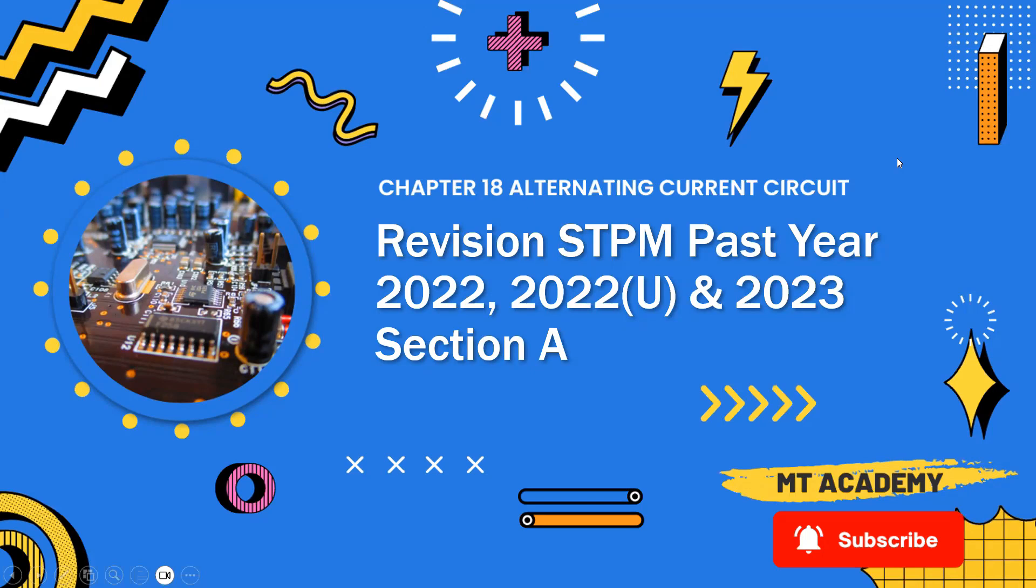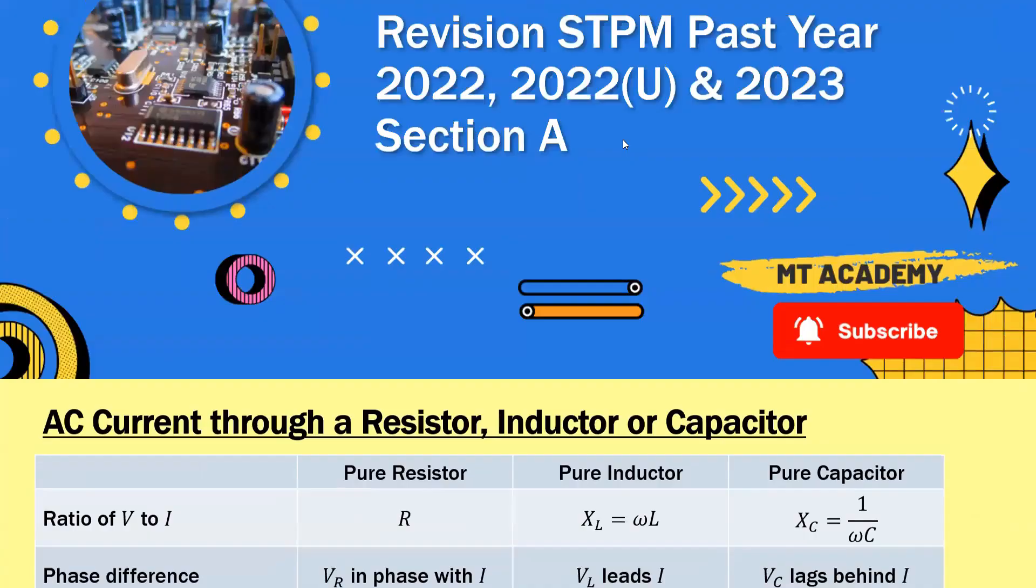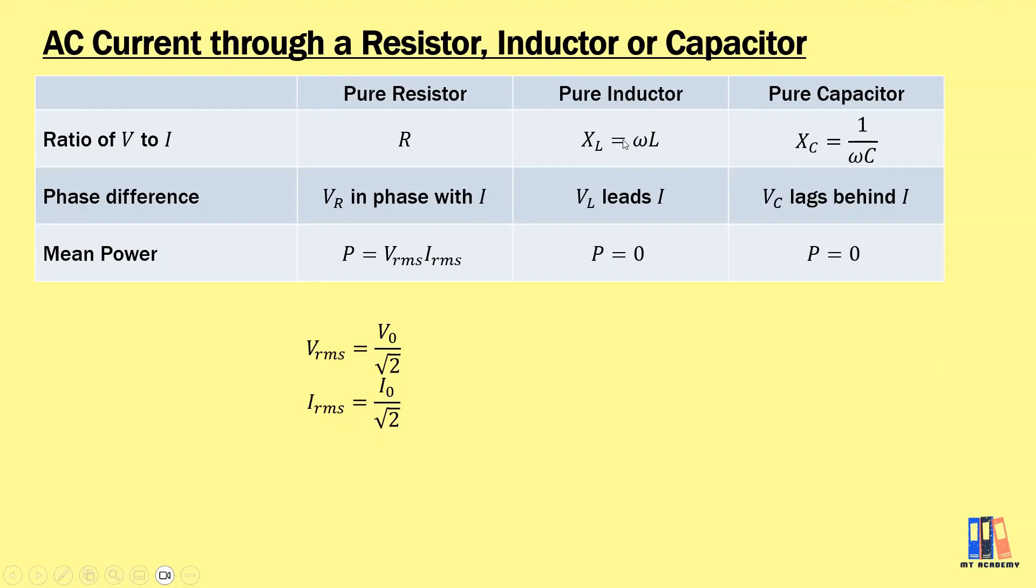Today we'll discuss the last chapter in this series, which is alternating current circuits. We start with the summary of AC current through a pure resistor, pure inductor, and pure capacitor. First is the resistance or reactance for the inductor and capacitor, and the phase difference between V and I for these three components separately. For the resistor they are in phase, for pure inductor V leads the current, and for pure capacitor V lags behind the current.